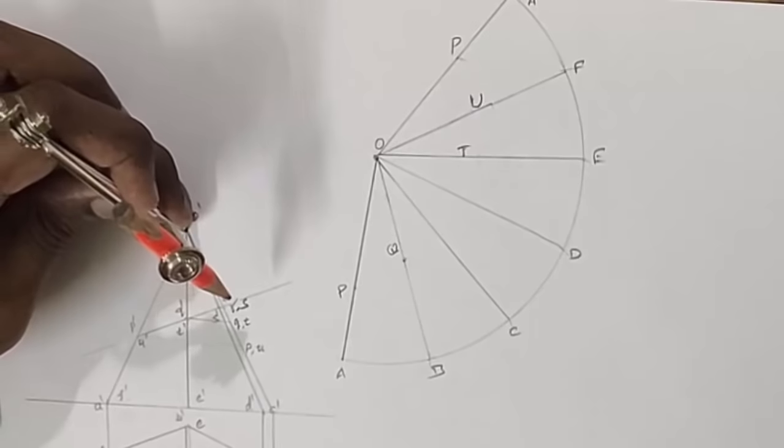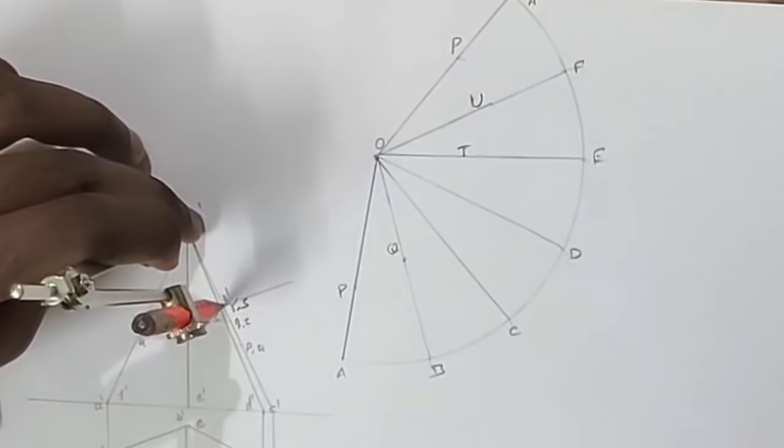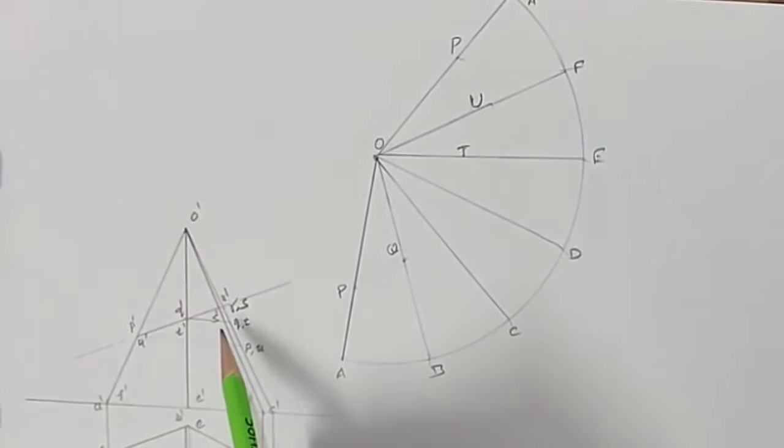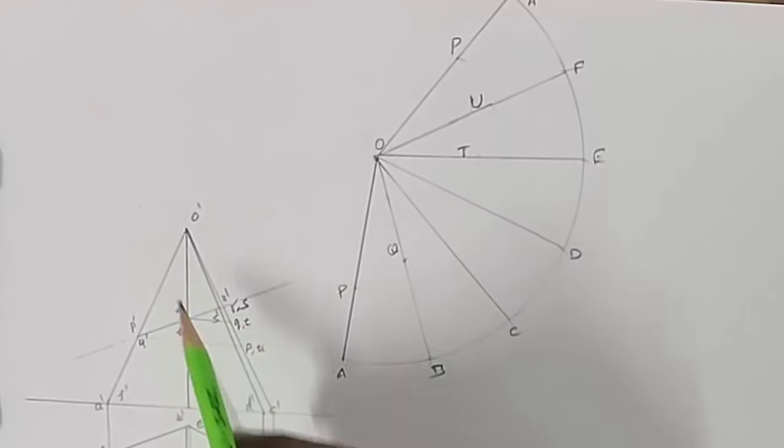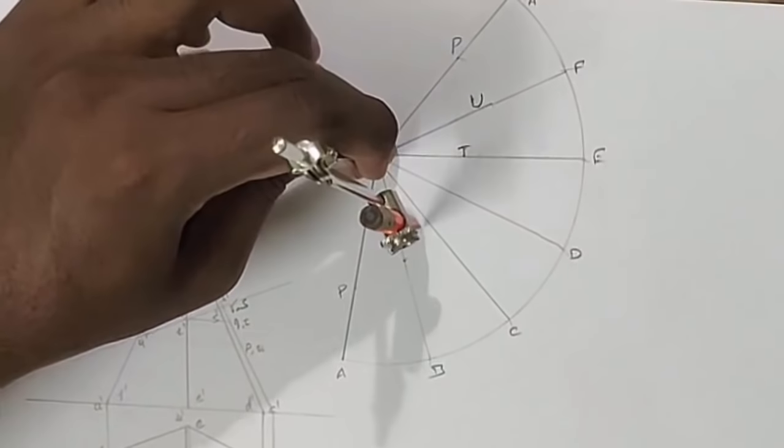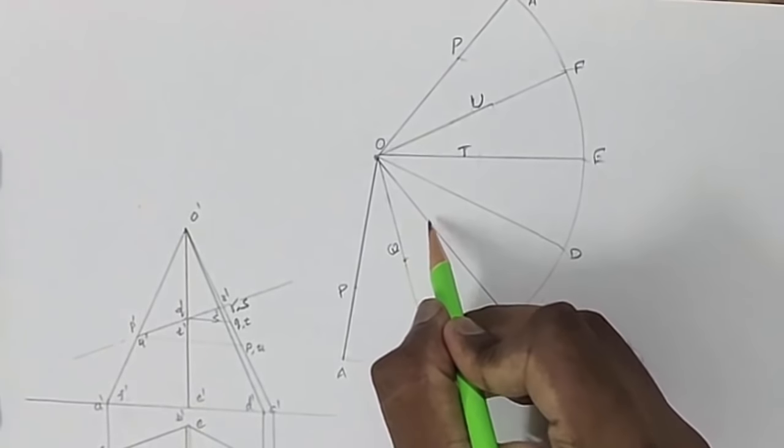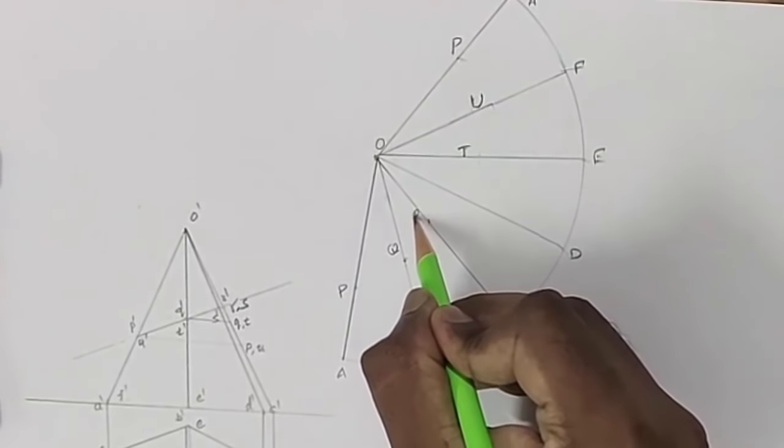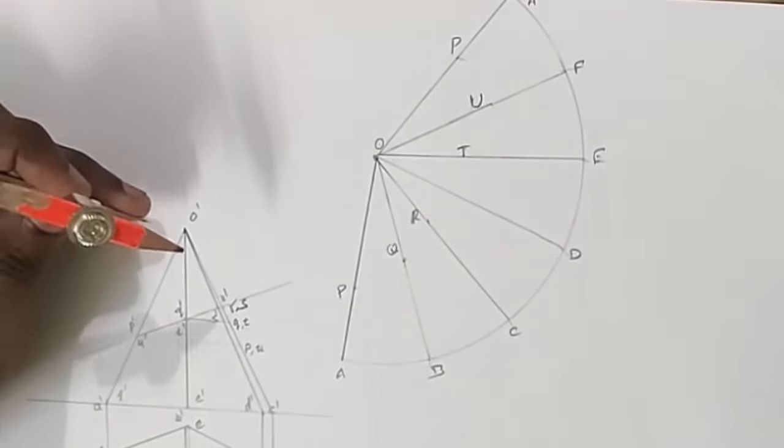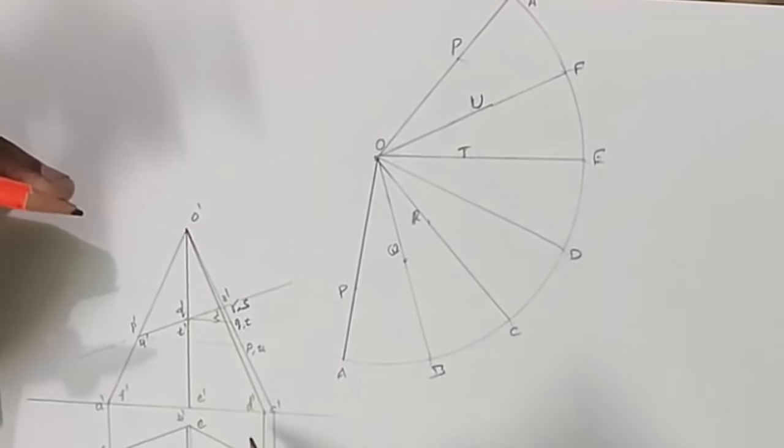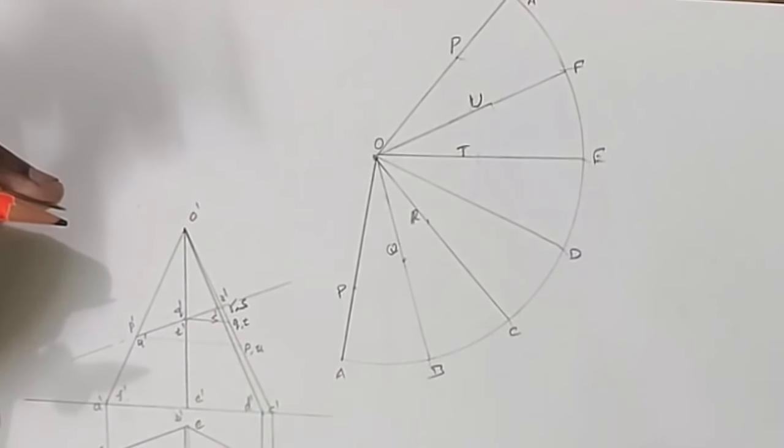Then measure the distance of point R and S here. At this distance, point R and S are in the edge OD and OC. Point R is there, and at the edge OD, point S is located.